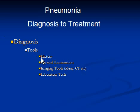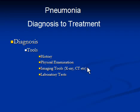The diagnostic tools are: history, physical examination, and imaging tools. The most important imaging tool is chest X-ray. CT scan can also be used to rule out other pathologies, and ultrasound can also be used sometimes. The last tool is laboratory tests.